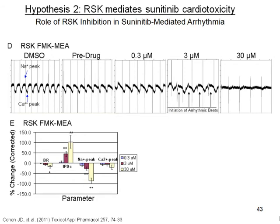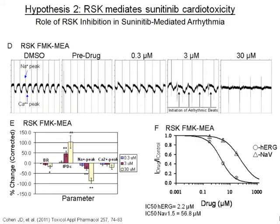Moving on to RSK: with as low as 0.3 micromolar we saw decreases in beat rate as well as in the sodium channel, and by 3 micromolar there were more significant decreases as well as a decrease in calcium. Similarly, using the PatchXpress with cells overexpressing HERG and the sodium channel, I saw very potent inhibition of HERG but much less significant — or not significant at all — inhibition of the sodium channel. Therefore, it appears that the IPS cells may be more predictive of sodium channel inhibition than overexpressing NAV1.5 in Chinese hamster lung cells.